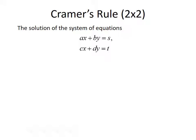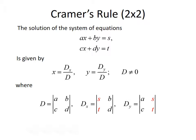Now that we've talked about determinants, we can talk about Cramer's Rule for a 2x2 system. Cramer's Rule says the solution of the system ax plus by equals s, and cx plus dy equals t, is given by x equals D sub x divided by D, and y equals D sub y divided by D, assuming D does not equal 0. Here D is the determinant of the coefficient matrix (a, b, c, d), D sub x replaces the first column with constants s and t, and D sub y replaces the second column with s and t.